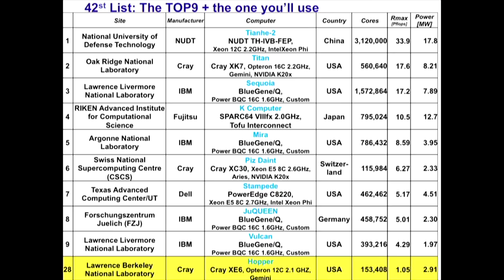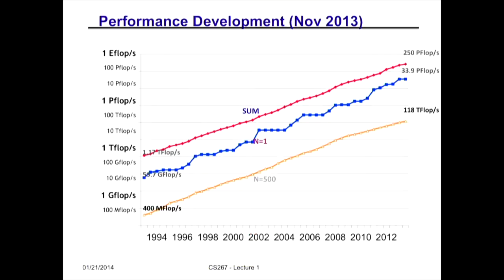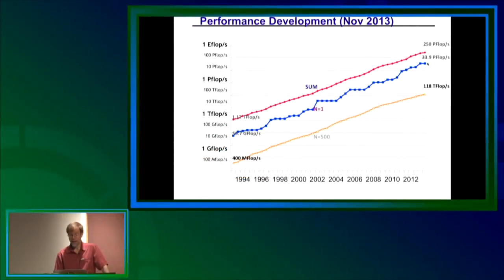Looking at trends over time: from when they first started collecting data in the early 1990s up to last November, the vertical log-scale axis shows number one, number 500, and the sum of the 500 fastest machines. This follows the exponential trend you'd expect from Moore's Law, with a few flat places. In one year, somebody built a really fast machine — the Earth Simulator in Japan — and it held the world record for five years. Back in 1994, the fastest machine in the world was about 57 gigaflops, which is what your laptop with a GPU does today.